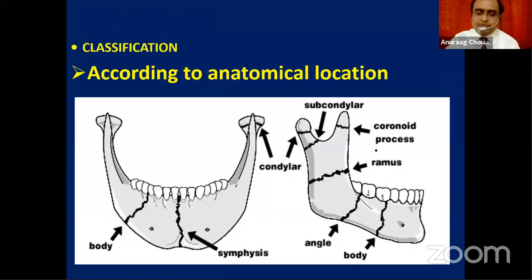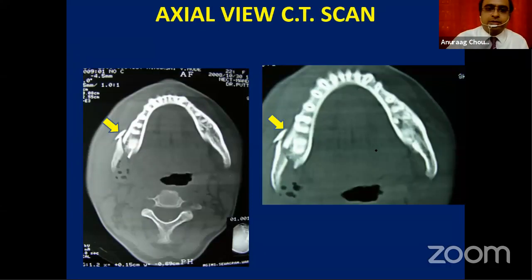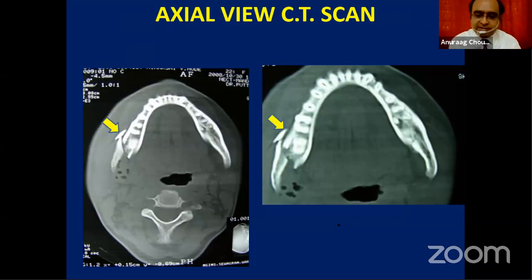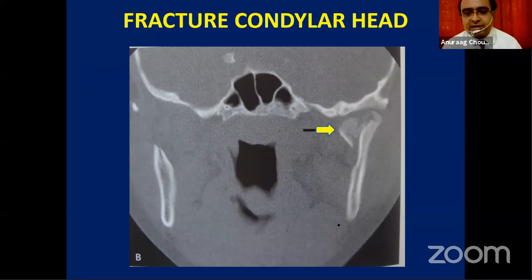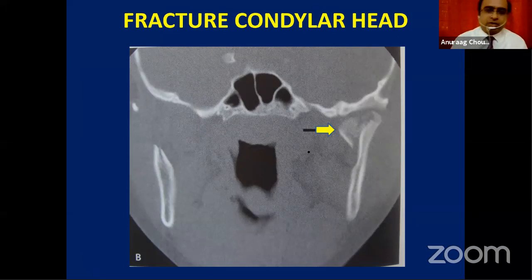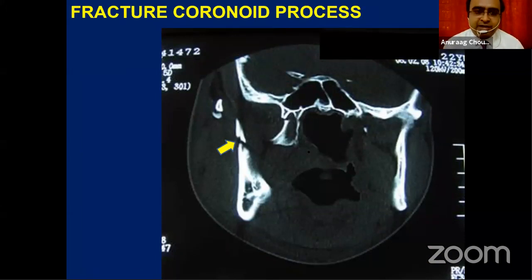For mandibular fractures, the basic classification follows anatomical location. This patient, seen in my post-graduation days, reported with trauma injury. You can see the right-side angle fracture of the mandible with the arrow indicating the fracture site on CT. The vertical condylar fracture, which is usually superimposed in plain radiography, can be seen very precisely without superimposition in the coronal plane. Everyone can appreciate the comminuted fracture of the condyle clearly.